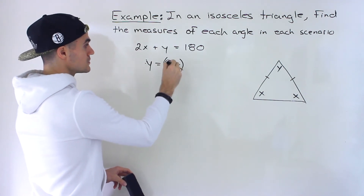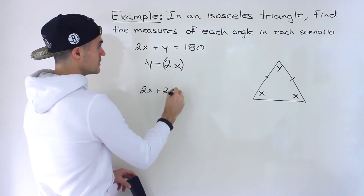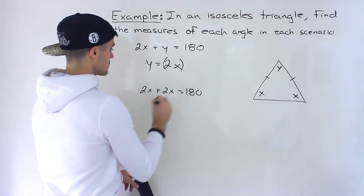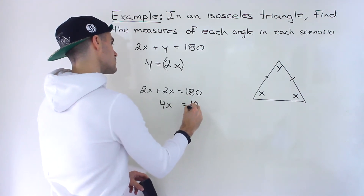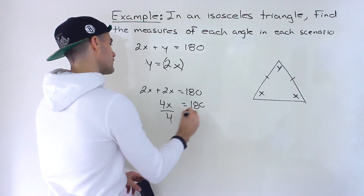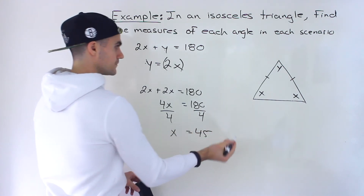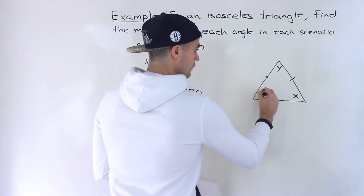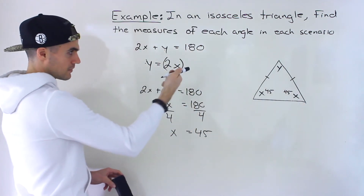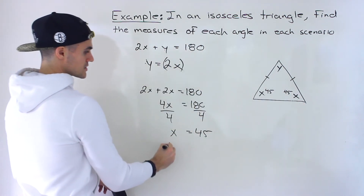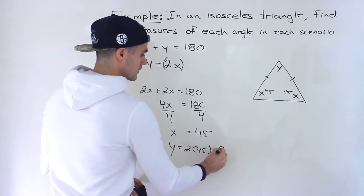Substituting y equals 2x into the first equation: 2x plus 2x equals 180, giving us 4x equals 180. Dividing both sides by 4, x equals 45. So the two equal angles are each 45 degrees.